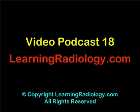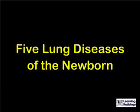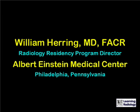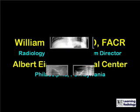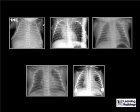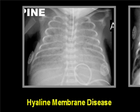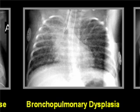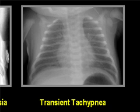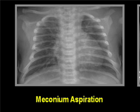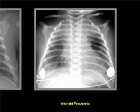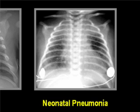This is Video Podcast 18 from LearningRadiology.com: Five Lung Diseases of the Newborn. I'm William Herring from Albert Einstein Medical Center in Philadelphia. The five diseases we're going to talk about are hyaline membrane disease, bronchopulmonary dysplasia, transient tachypnea of the newborn, meconium aspiration syndrome, and neonatal pneumonia.